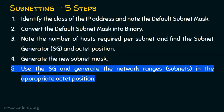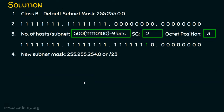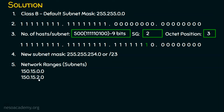Now let's move on to step number five: generating the network ranges, that is, the subnets. We use the subnet generator in the appropriate octet position. In previous examples the octet position was 4, but here it is 3, so the increment happens in the third octet. The given IP address 150.15.0.0 is the first IP address of the first subnet. Adding the subnet generator of 2 to the third octet: the second subnet starts at 150.15.2.0, the third at 150.15.4.0, then 150.15.6.0, 150.15.8.0, and so on.